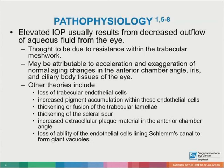Elevation of the intraocular pressure usually results from decreased facility of aqueous fluid outflow, and is thought to be due to resistance within the trabecular meshwork. Multiple theories have been postulated about the cause of increased flow resistance, and include loss of trabecular endothelial cells, increased pigment accumulation within these endothelial cells, thickening or fusion of the trabecular lamellae, thickening of the scleral spur, increased extracellular plaque material in the anterior chamber angle, and loss of ability of the endothelial cells lining Schlemm's canal to form giant vacuoles.